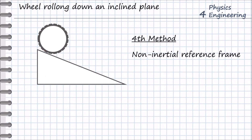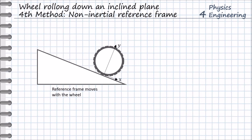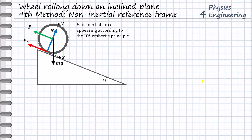We go to the fourth method: consideration of a non-inertial reference frame. This time we connect our coordinate system to the wheel and let it move together with the wheel downhill. The coordinate system is therefore a non-inertial reference frame since it moves with linear acceleration. We define the forces acting on the wheel: gravity force, reaction force, and friction force. Since we are dealing with a non-inertial reference frame, we cannot directly use Newton's laws. Instead, we use D'Alembert's principle, which introduces an inertial force Fn acting on the center of the wheel, allowing us to use Newton's second law with this additional force.